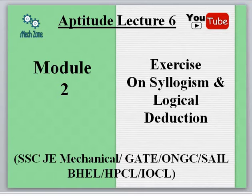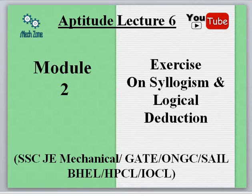In the previous module we have already covered three types of examples where we saw how by using Venn diagrams we are able to derive whether the conclusion given to us is following from the statements or not. If any one of the cases becomes invalid then the entire statement becomes invalid. In this lecture we shall be covering different types of examples asked in various competitive examinations to make ourselves more perfect on syllogism and logical deduction.